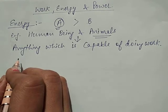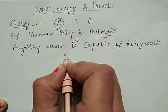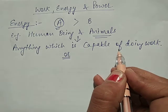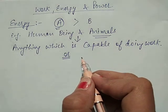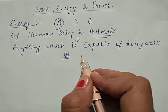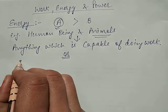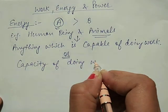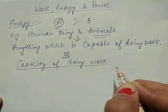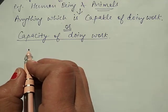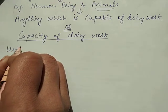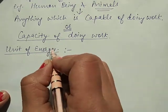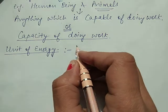You can also see that the capacity of doing work by a body or an object is also called the energy of the body or object. So capacity of doing work is called energy. Now next is the unit of energy. The unit of energy is the same as that of work.